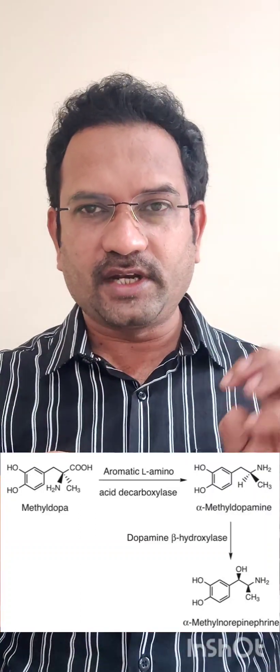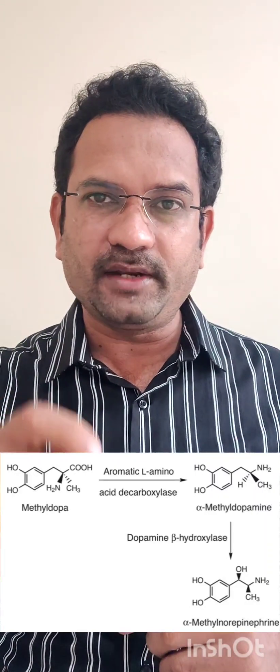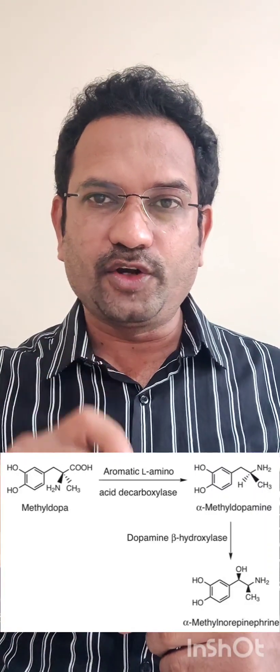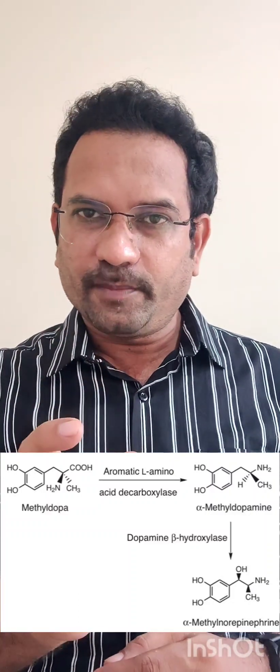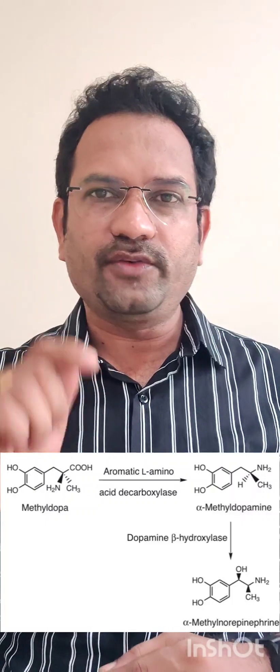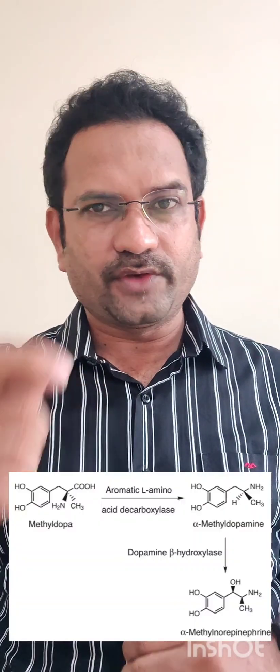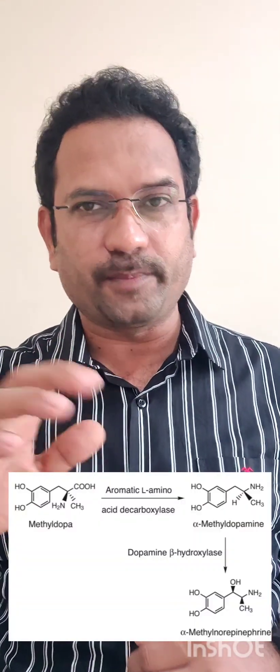Methyl dopamine is structurally similar to dopamine, hence dopamine beta-hydroxylase acts on methyl dopamine and converts it to methyl norepinephrine. This methyl norepinephrine is not a natural neurotransmitter — this is called a false transmitter. So when there is a signal, this false transmitter, methyl norepinephrine, will get released, but it will not activate alpha or beta receptors. That is the reason why it is called a false transmitter.